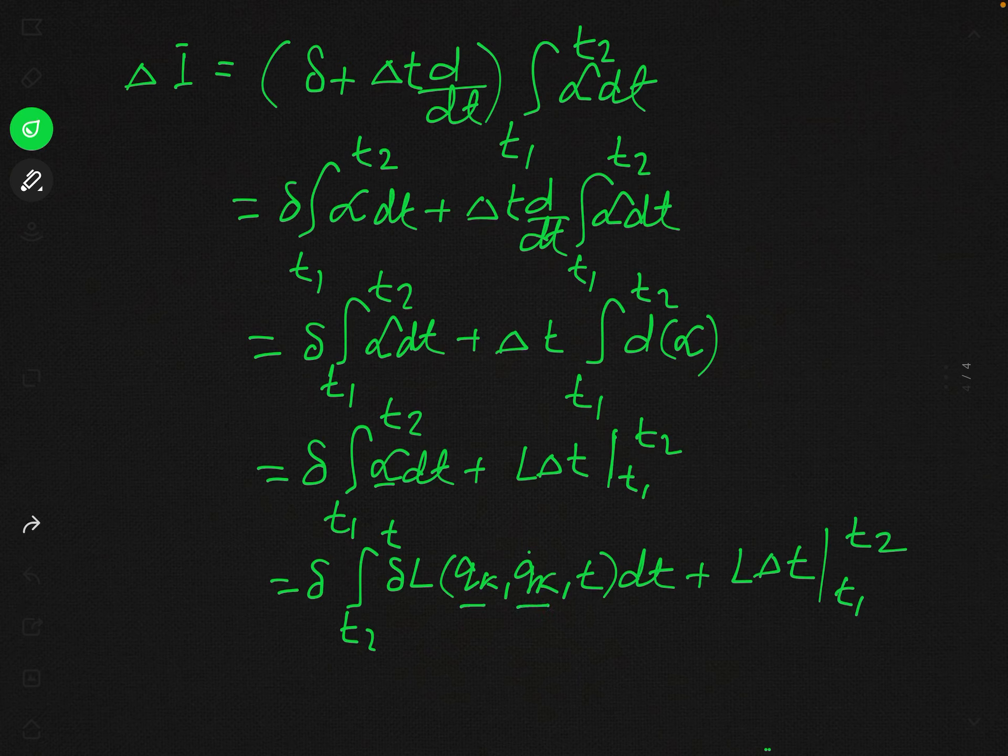Continuing the partial differentiation, we also add the term: integral from t1 to t2 of (del L / del t) delta t dt, plus L delta T at limits t1 and t2. However, in the small delta variation, delta t is actually zero at the end points. So the term involving del L / del t times delta t will actually vanish, being zero.